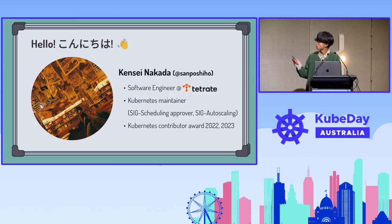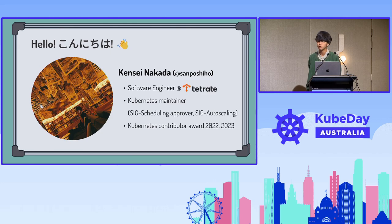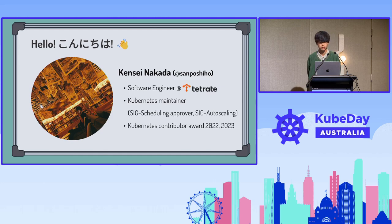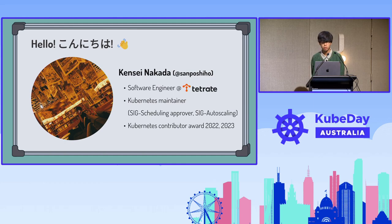I'm Kensei Nakada from Japan, so this is my first time visiting KubeCon. I'm working for Tetris, building the SaaS solution for customers. I've been contributing to Kubernetes for almost three to four years now, and I usually focus on scheduling as an approver and have led many major feature developments.